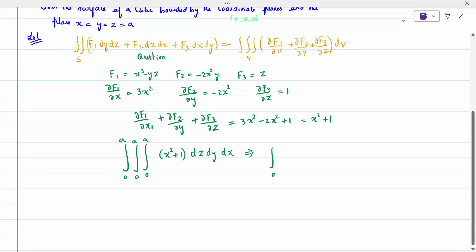From 0 to a, I will integrate first with respect to z. When I integrate, (x²z + z) from 0 to a, dy dx. Substitute a, which can be taken outside. That will be taken outside, 0 to a, (x² + 1) dy dx.